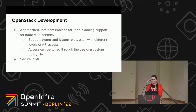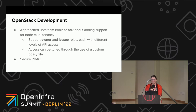At the time, Ironic had no concept of multi-tenancy and could only be used by admin users with full API access to every node. The answer was a definite yes — we could bridge the gap. The upstream Ironic community is one of the most welcoming I've had the pleasure of working with. We approached them about extending Ironic with node multi-tenancy and they were extremely receptive. They helped guide us through implementing the feature upstream. Nodes now have owner-lessee fields settable to an OpenStack project ID, with each role having different levels of API access configurable through a custom policy file.